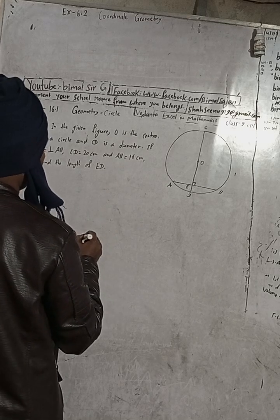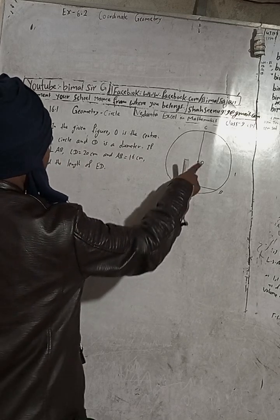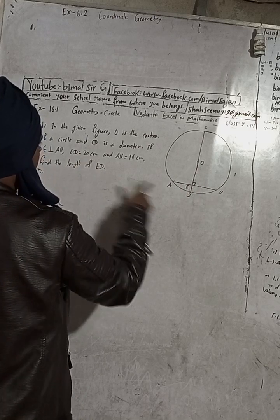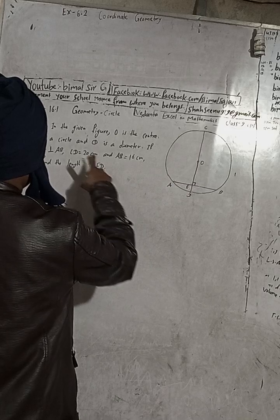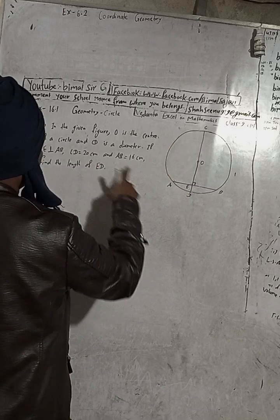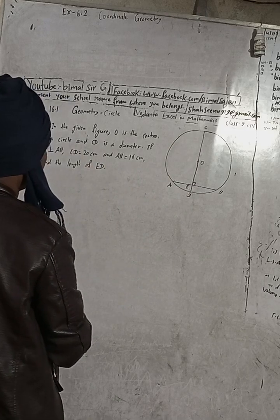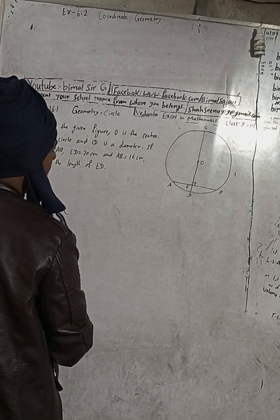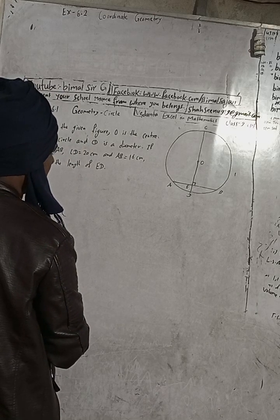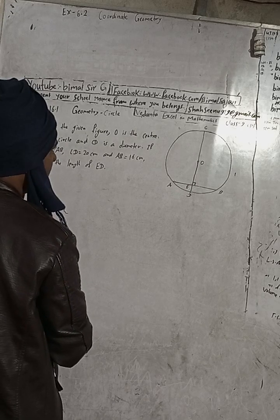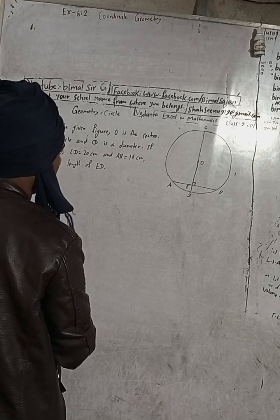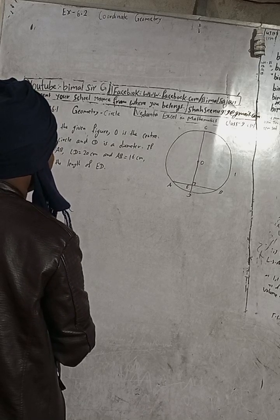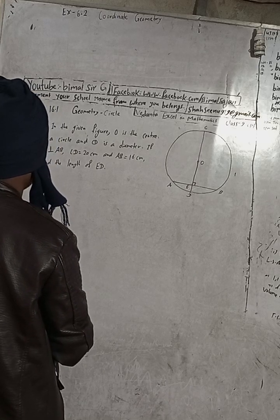CD is a diameter. OE is perpendicular to AB. CD is equal to 20 cm, meaning the diameter is given as 20 cm. AB is equal to 16 cm. We have to find the length of ED.